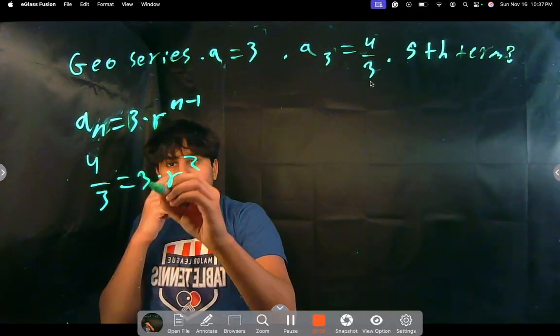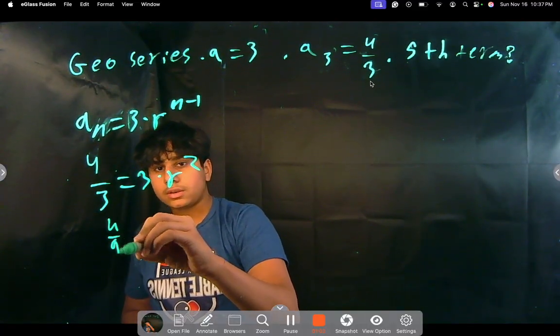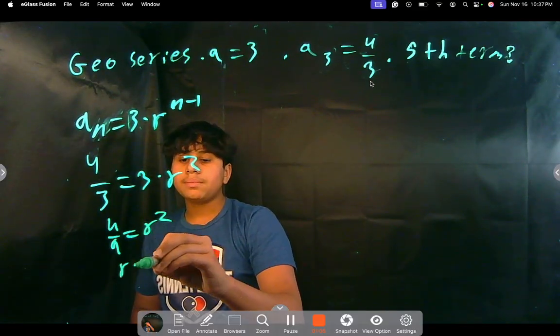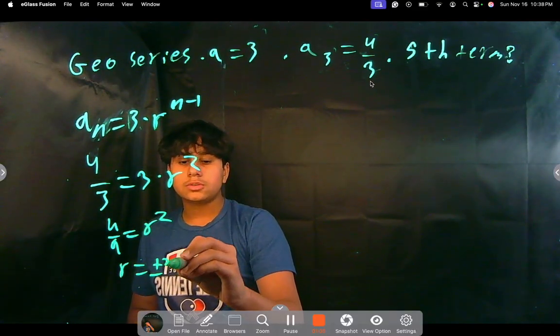So then we divide each side by 3, right? This will become 4 over 9 equals r squared and then this can become plus or minus 2 over 3.